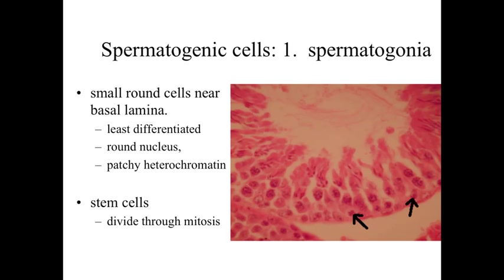Like other stratified epithelia, we go from relatively undifferentiated cells near the base to highly differentiated cells towards the surface. The first spermatogenic cells are the spermatogonia — round cells sitting upon the basal lamina. These are the least differentiated of the cells and look very similar to normal body cells, with a round nucleus and a relatively patchy pattern of heterochromatin within the nucleus.